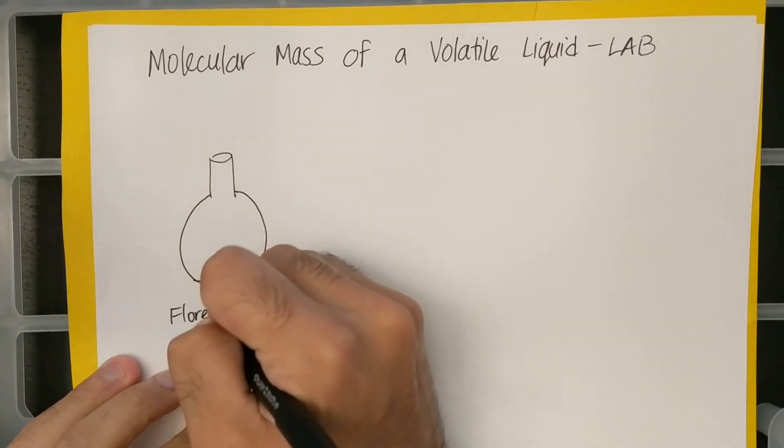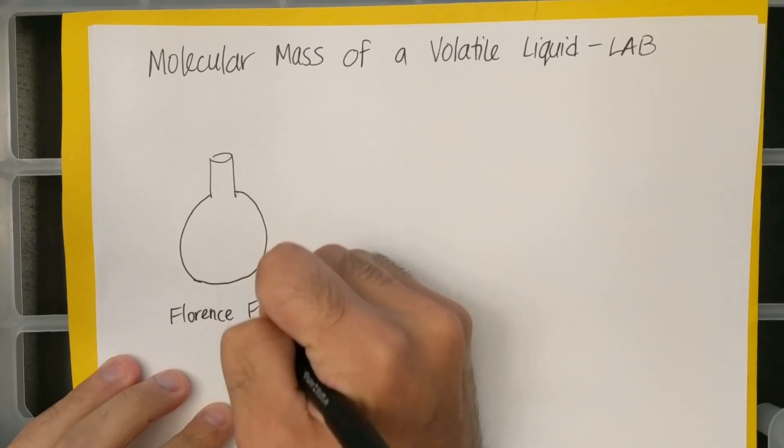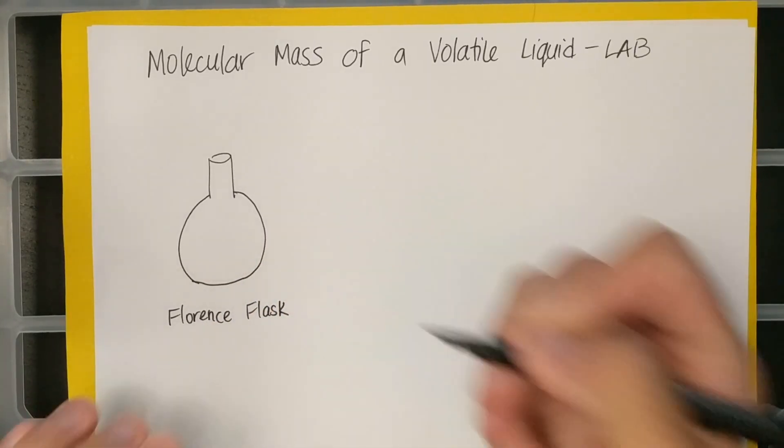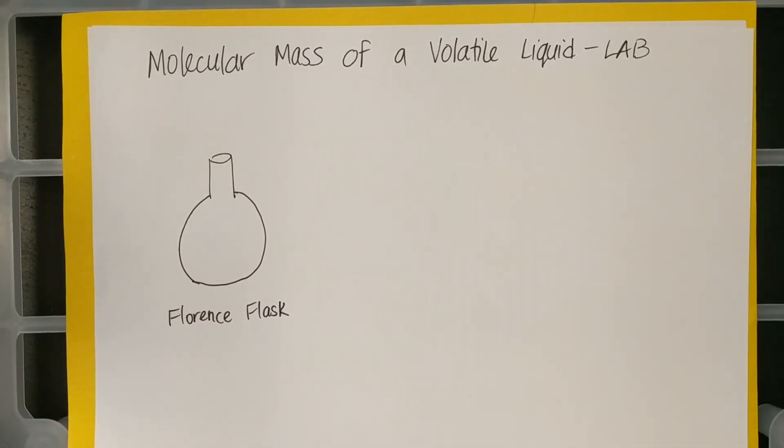Make sure you know the name of these pieces of glassware, because even if I mention it in a question on a quiz or a test, you know what shape we're looking at. So this was your Florence flask. And as soon as you got it, I asked some of you, was this empty? And some of you were like, oh yeah, it was empty.